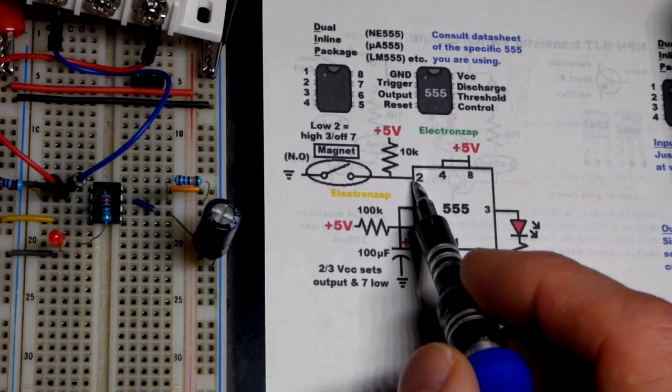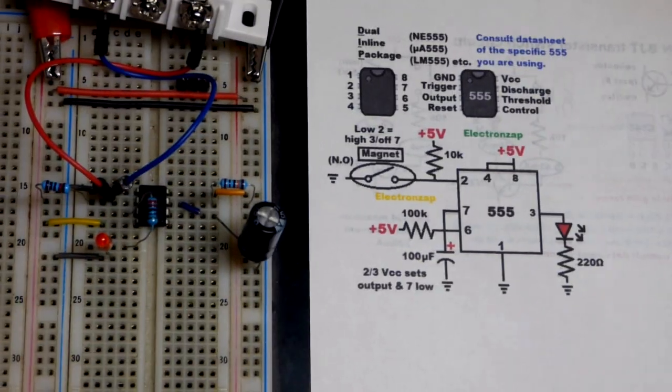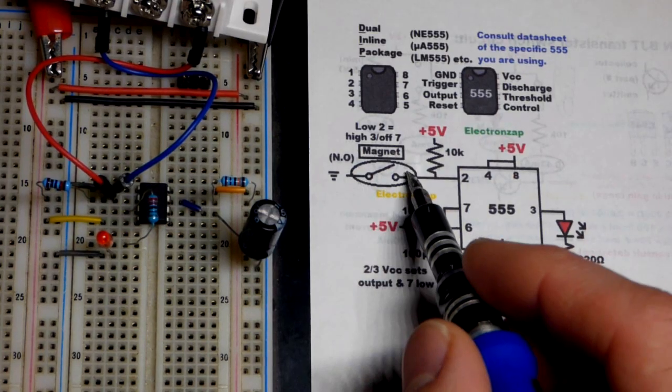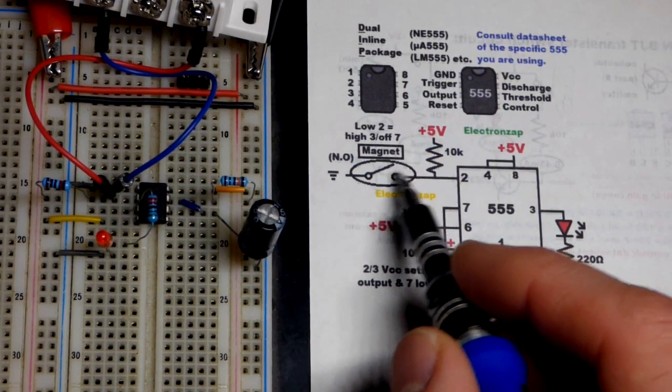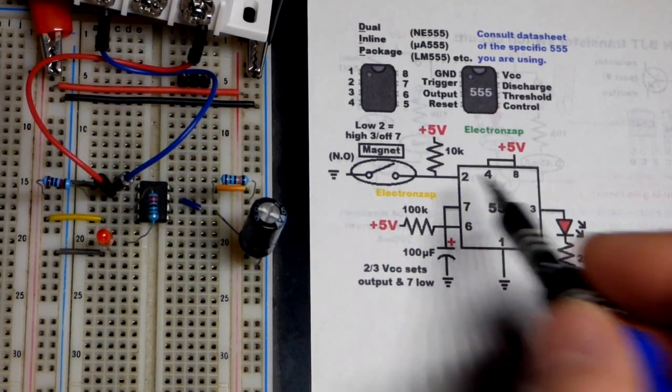We've got a pull-up resistor to keep the input high, since we are wired to the normally open spot - you know, COM normally open right there. That means that it's going to be open, off, until we remove the magnet. Then it will close and we'll get our low connection.